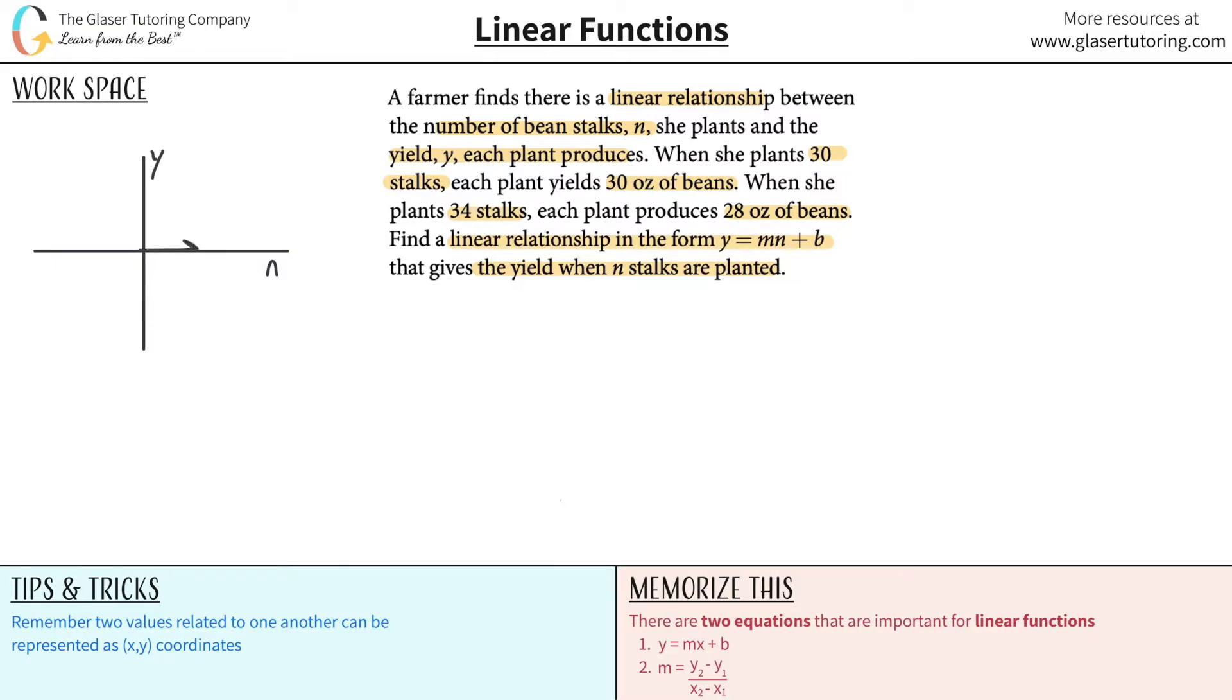So it's saying when we plant 30, let's just say 30 is here. We plant 30 stalks, we're going to get a yield per plant of about 30 ounces, okay? So let's just say that represented 30. So let's plug that in, that point.